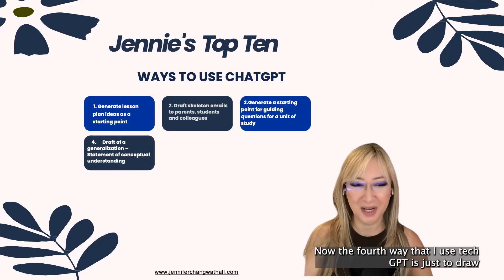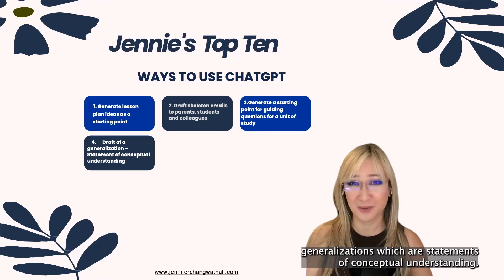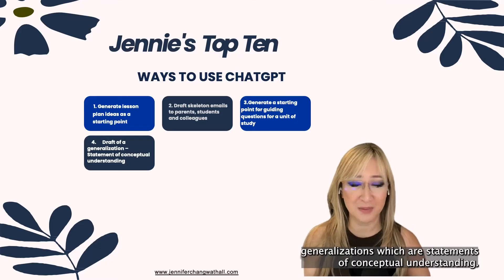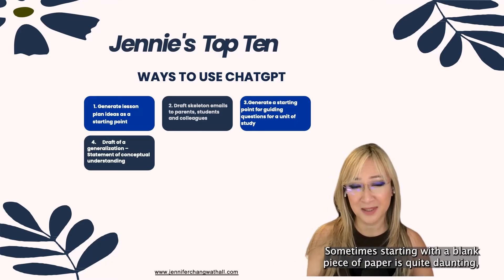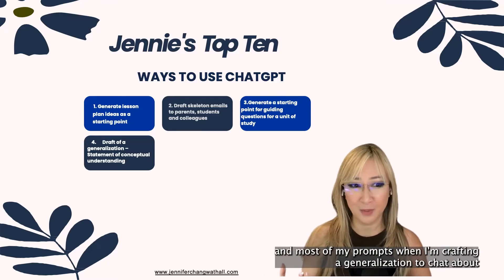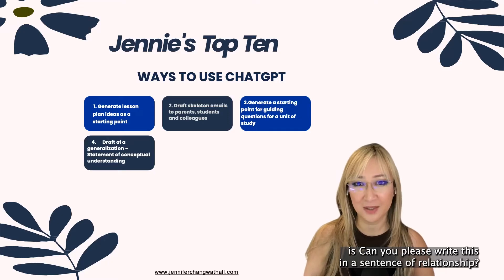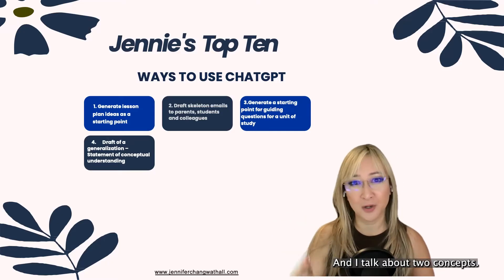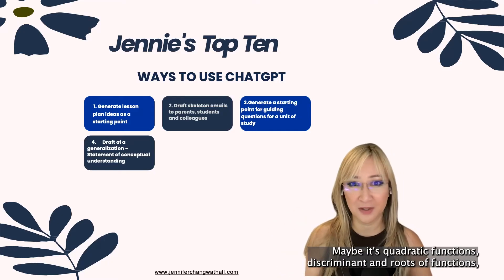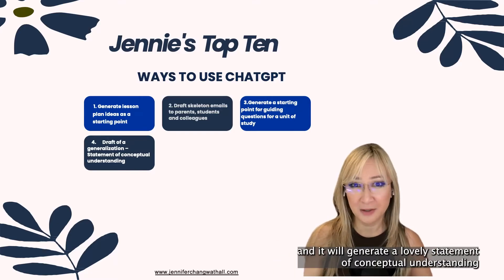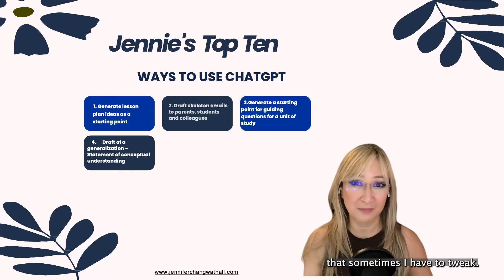The fourth way that I use ChatGPT is to draft generalizations, which are statements of conceptual understanding. Sometimes starting with a blank piece of paper is quite daunting. Most of my prompts when I'm crafting a generalization to ChatGPT is: can you please write this in a sentence of relationship? I talk about two concepts — maybe quadratic functions, discriminant and roots of functions — and it will generate a lovely statement of conceptual understanding that sometimes I have to tweak.